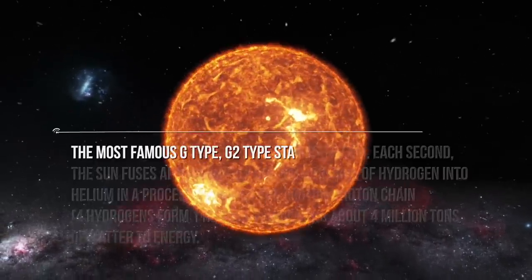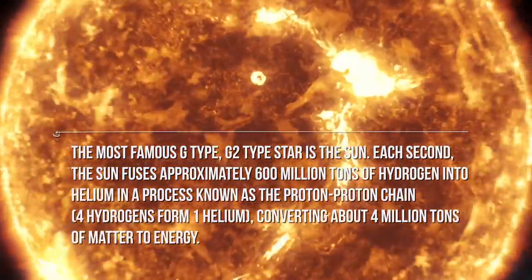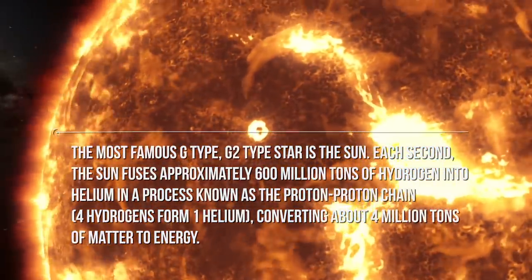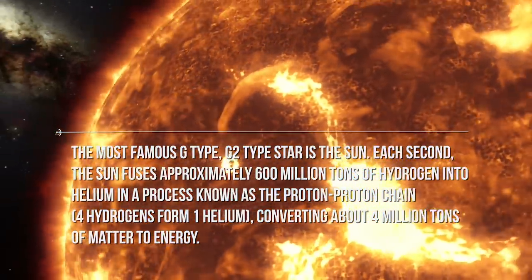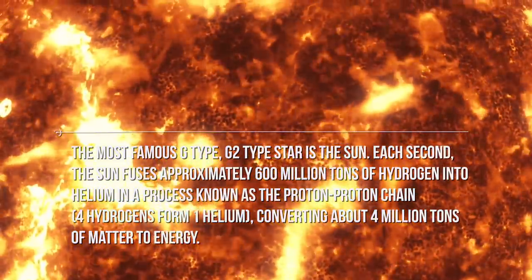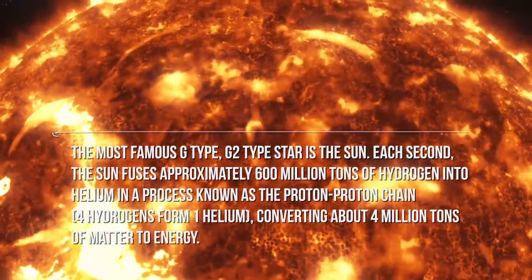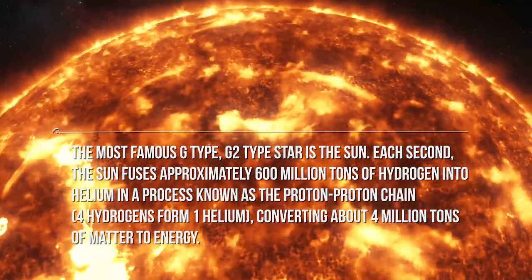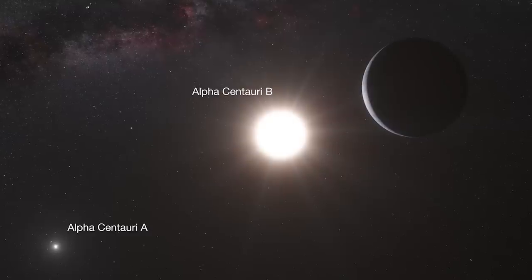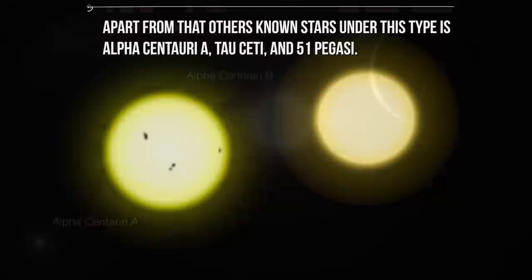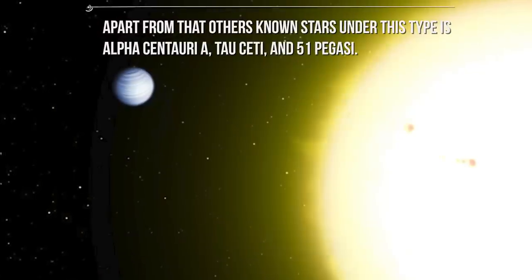The most famous G-type star is the Sun. Each second, the Sun fuses approximately 600 million tons of hydrogen into helium in a process known as the proton-proton chain. Four hydrogens form one helium, converting about 4 million tons of matter to energy. Apart from that, other known stars under this type is Alpha Centauri A, Tau Ceti, and 51 Pegasi.